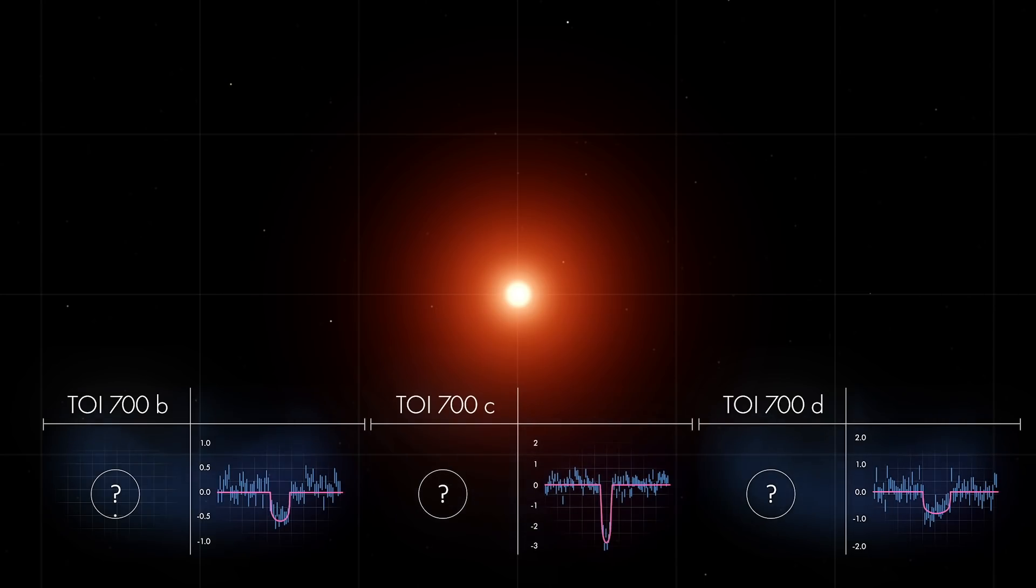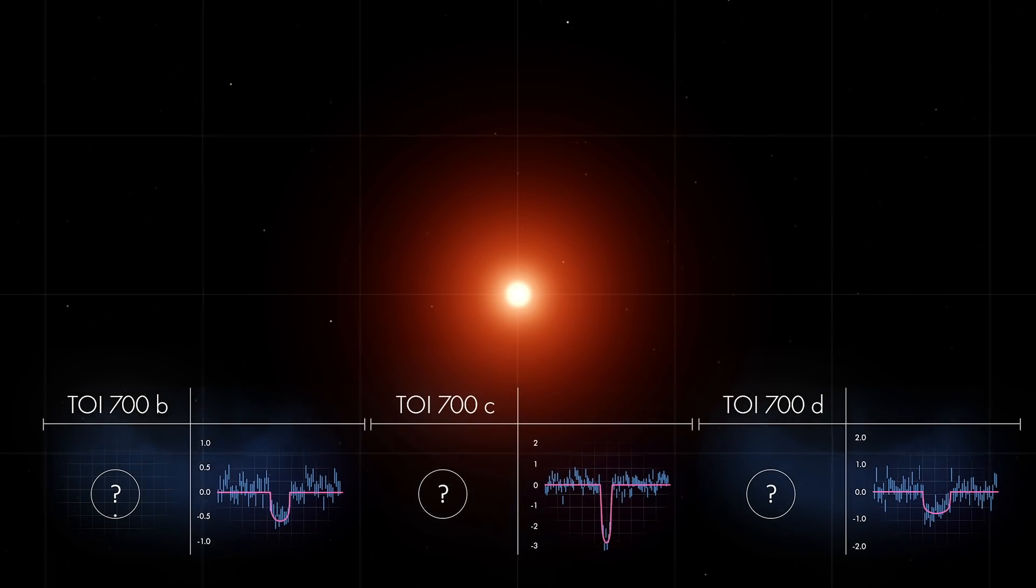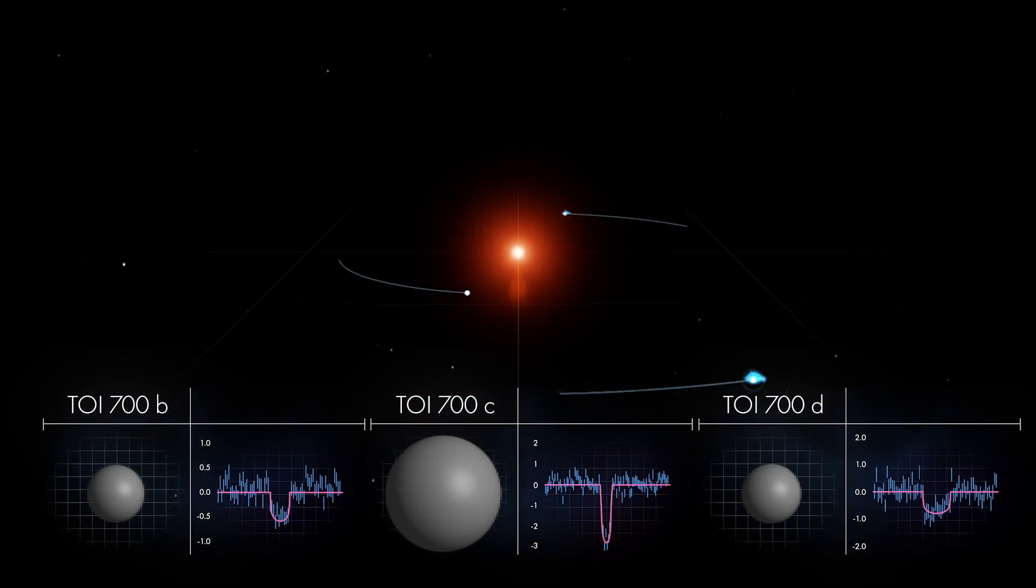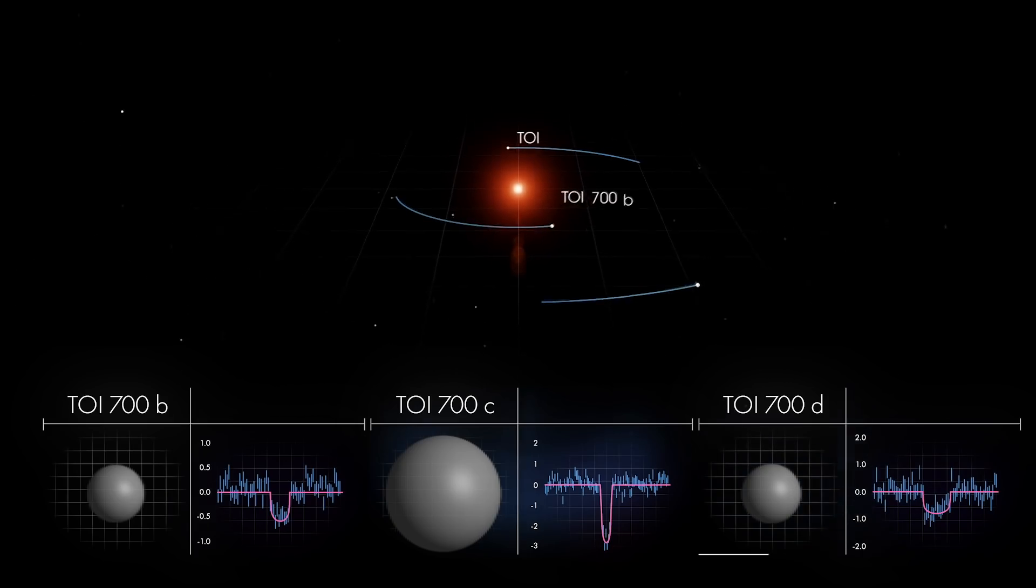TESS observed this system for nearly 11 months and saw each planet transit multiple times. Scientists determined that the inner and outer planets are almost Earth-sized and may be rocky.